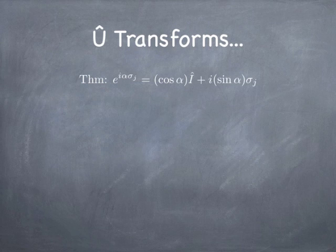There's a special class of unitary transformations we're going to need in order to do the teleportation. First, we need a mathematical theorem. Basically the theorem goes like this: e to the i alpha times a sigma matrix — where the sigma matrices are the Pauli matrices sigma x, sigma y, and sigma z — if you calculate e to the i alpha sigma_j, what you get is cosine(alpha) times the identity plus i times sine(alpha) times sigma_j. You can use any of the three sigma_j's and this will work. We can use this to build up essentially arbitrary transformations of spin-1/2 particles.